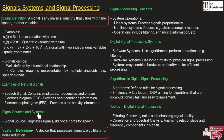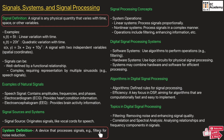Now let us understand signal source and systems. The signal source represents the origination of a signal — for example, if we take a speech signal, the source will be the vocal cord. A system can be defined as a device that processes the signal: it takes an input, processes it, and gives some output. For example, a filter is used for noise reduction — it takes a noisy signal as input and gives a cleaner output.